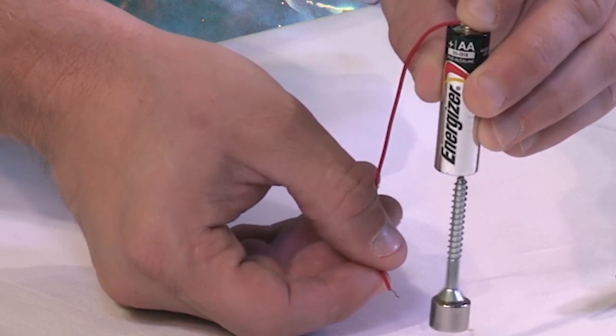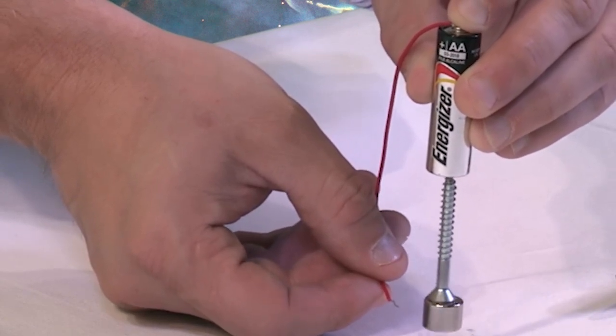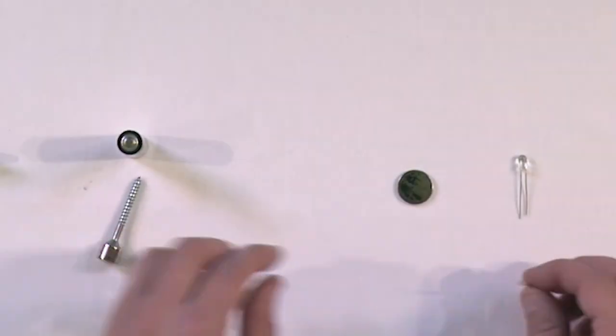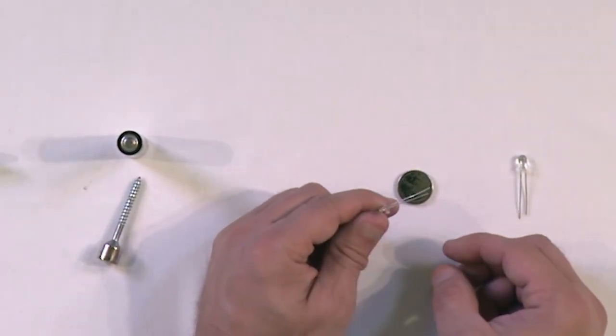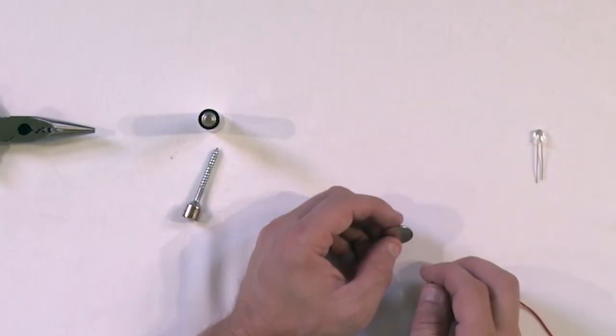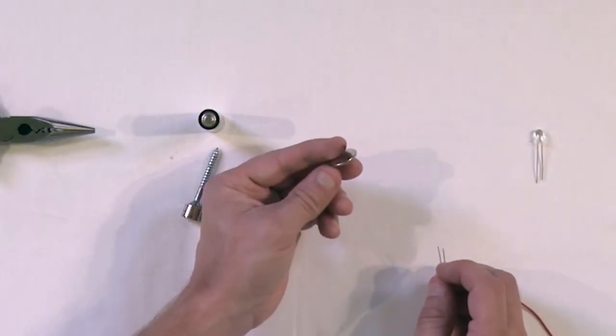Now as awesome as this is, we want to now kick it up a notch and make it look even more impressive. Here what I have are two light-emitting diodes. They're clear. They actually shine blue light. And here we have a very thin battery.